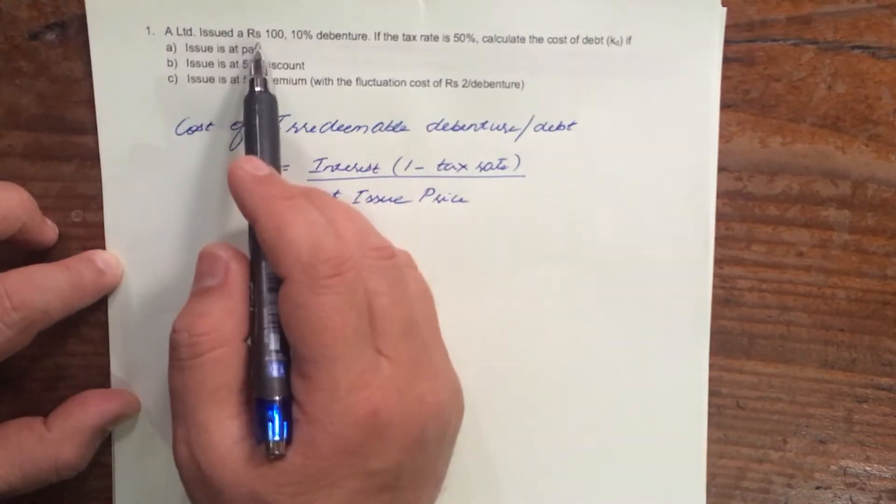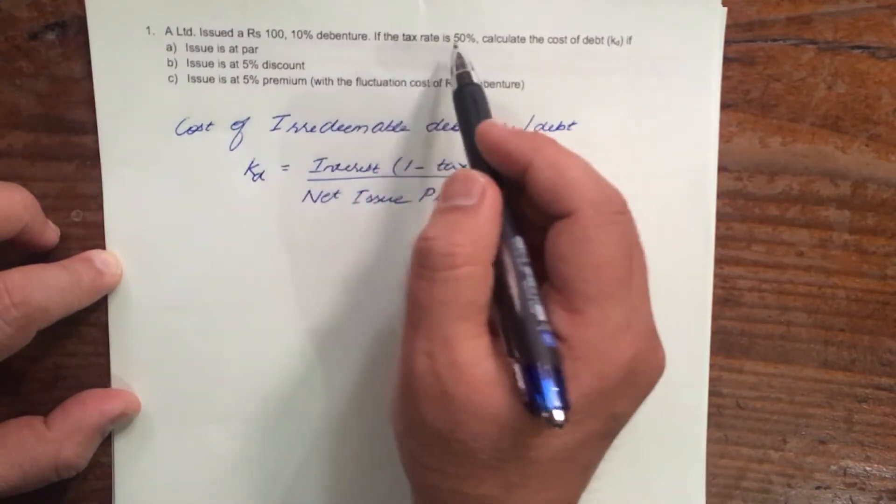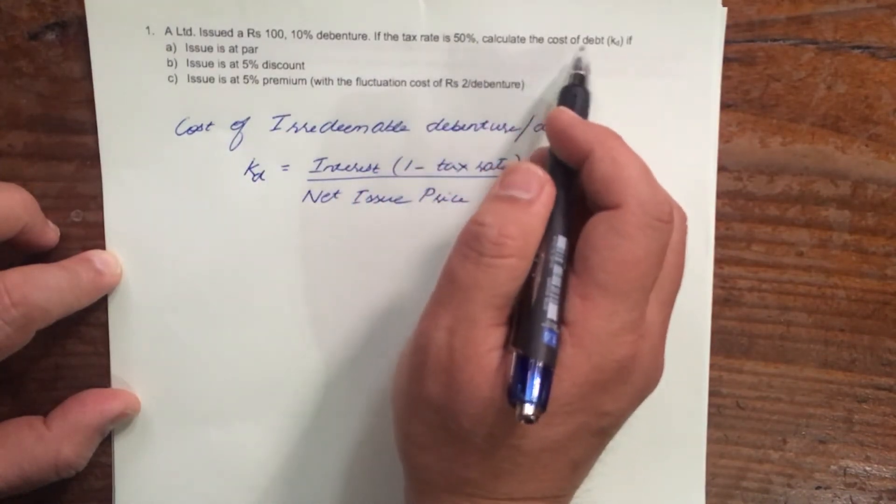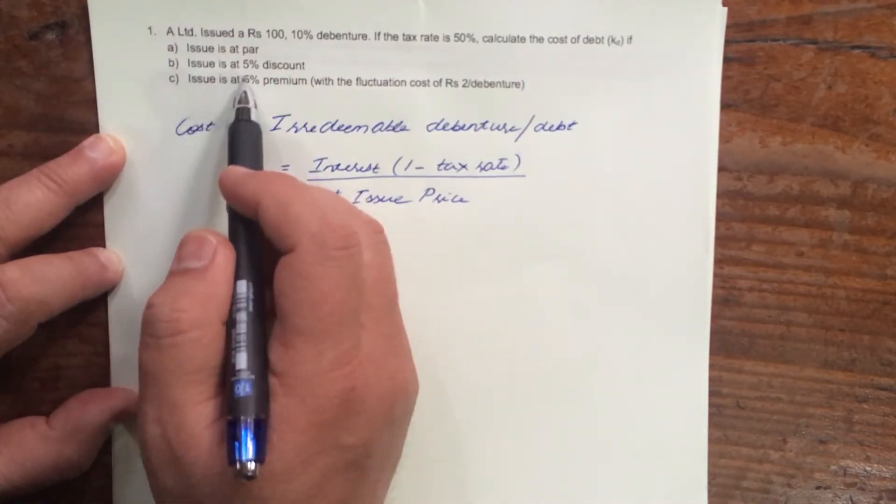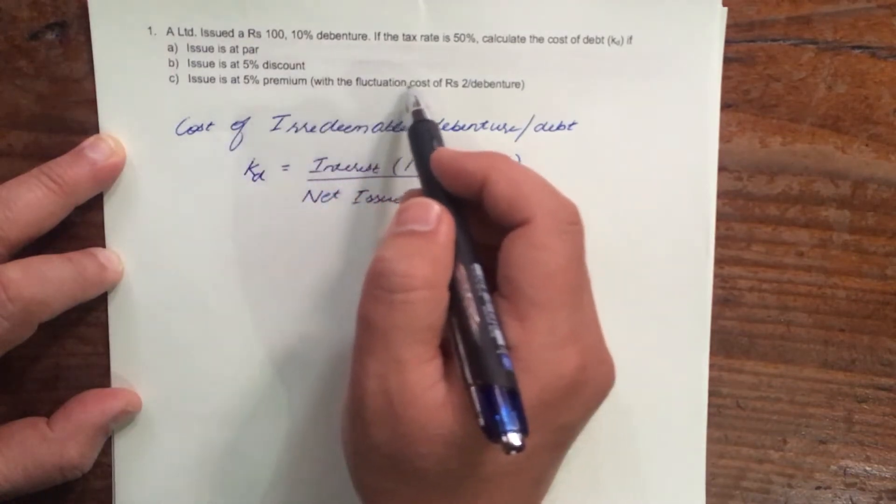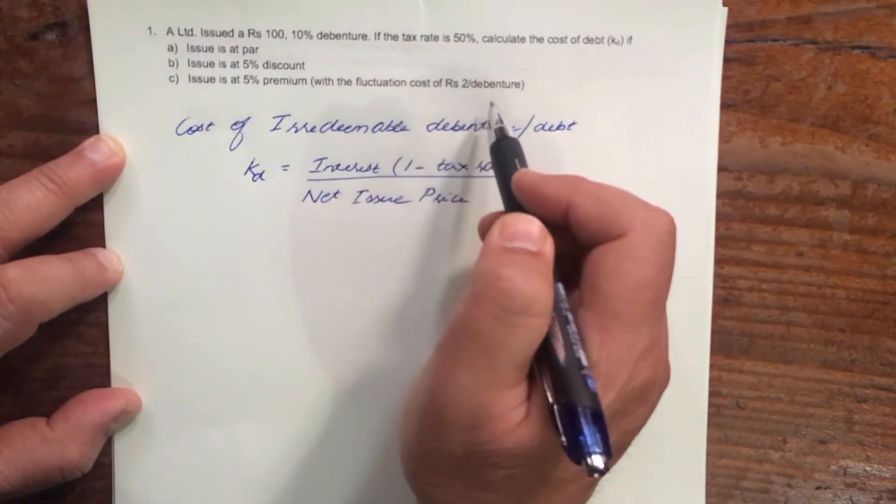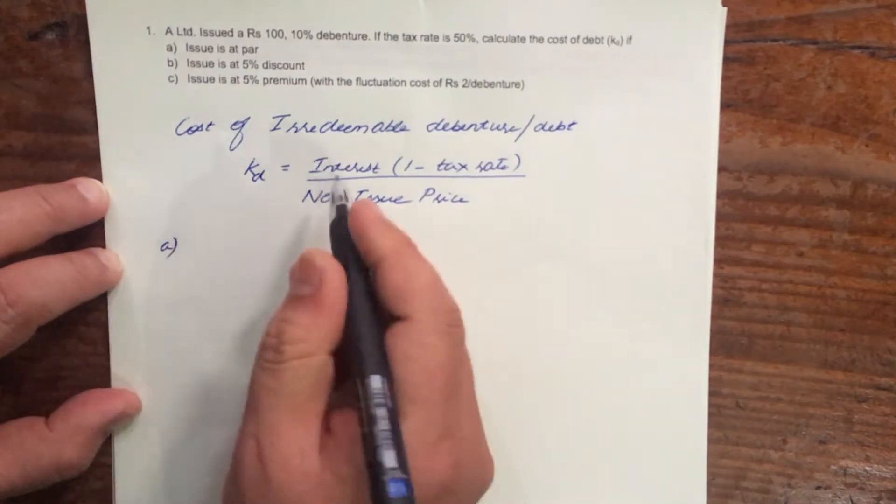A Ltd. issued a 100 rupee, 10% debenture. If the tax rate is 50%, calculate the cost of debt if: (A) issue is at par, (B) issue is at 5% discount, (C) issue is at 5% premium with flotation cost of 2 rupees per debenture. Let us look at the first one - issue is at par.